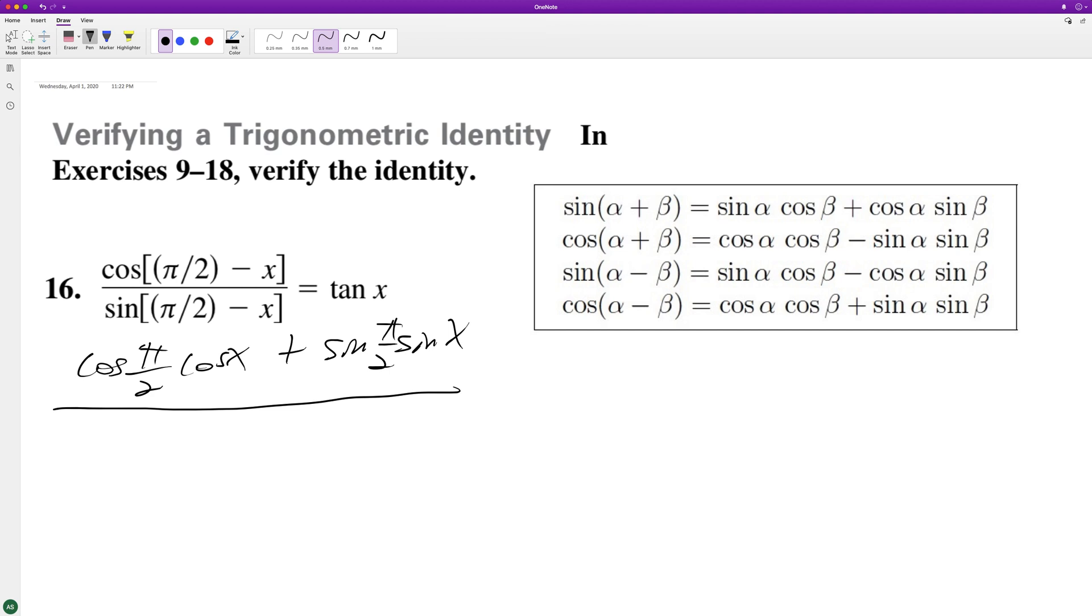This on the bottom becomes sine subtraction. So we're gonna start with this. So it's gonna be sine pi over two, cosine of x minus sine of x cosine of pi over two.